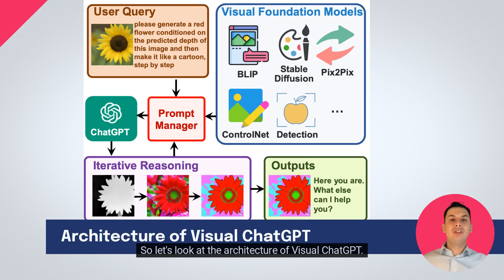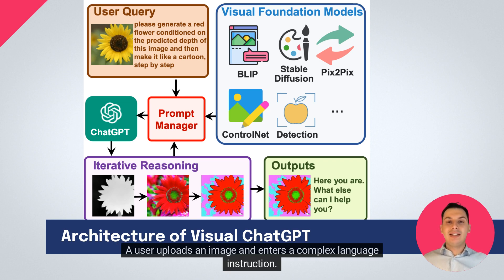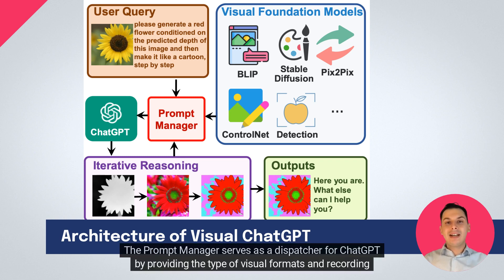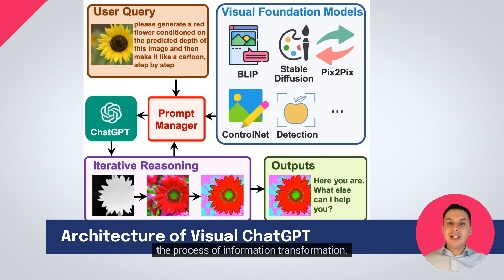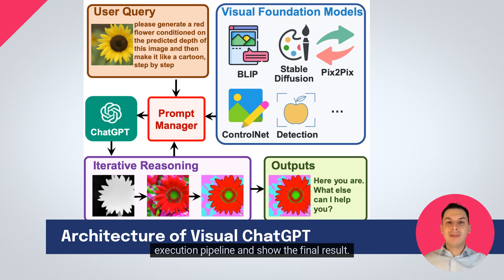Let's look at the architecture of Visual ChatGPT. As shown in the figure, Visual ChatGPT has an architecture that incorporates different visual foundation models. A user uploads an image and enters a complex language instruction. With the help of the prompt manager, Visual ChatGPT starts a chain of execution of related visual foundation models. The prompt manager serves as a dispatcher for ChatGPT by providing the type of visual formats and recording the process of information transformation. Finally, when Visual ChatGPT obtains the hints of completion from the prompt manager, it will end the execution pipeline and show the final result.